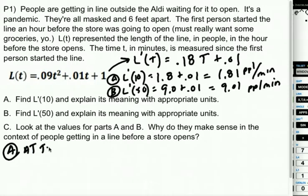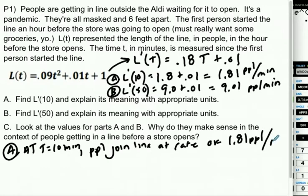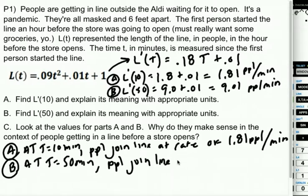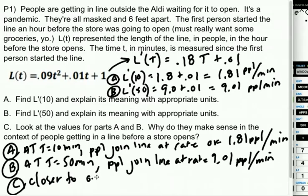So now let's explain A and B with appropriate units. So A, after 10 minutes, at t equals 10 minutes, people are joining the line at a rate of 1.81 people per minute. So a little bit fewer than 2 people per minute are walking up at minute 10. So I realize you can't technically have 1.81 people, but that's how rates work. It means that it's somewhere in the neighborhood of 1 to 2, inching its way towards 2. At t equals 50 minutes, so this is 50 minutes after Bob started the line, people are joining at a rate of 9.01 people per minute. So the cars are parked and people are, all these cars are parking and people are walking up to the store.